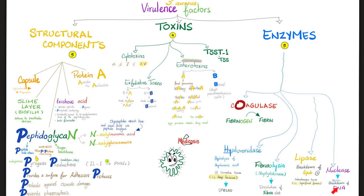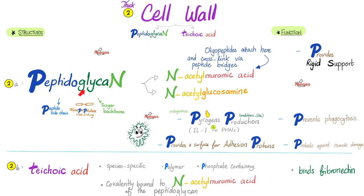Nuclease breaks down DNA, lipase breaks down lipids, fibrinolysin breaks down fibrin, and coagulase converts fibrinogen into fibrin to coagulate. Mnemonics about the cell wall: peptidoglycan. The N stands for N-acetylmuramic acid and N-acetylglucosamine. The P stands for peptide side chains, and then we cross-link them with a sugar backbone. For function: peptidoglycan provides rigid support, prevents phagocytosis, protects against osmotic damage, and provides a surface for adhesion proteins.